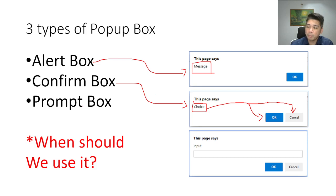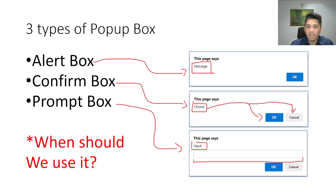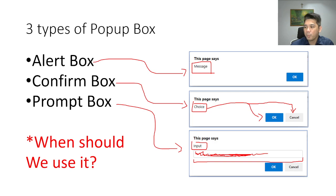The last one is the prompt box. The prompt box's concern is getting an input. If you notice, there is a text box or text area where the user will be typing something. Whatever they place inside the text area, we can get that value — remember the topic on values — and we can place it inside a variable.